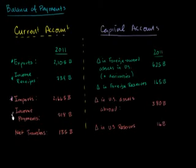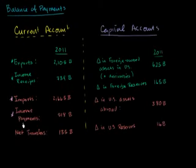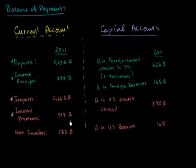On the other side, we have income payments — the other side of income receipts. This is foreigners owning assets in the United States. If a foreigner owns a pizza parlor in the United States and that pizza parlor makes $100,000 in a given year, that $100,000 will go to that foreigner as an income payment. This is income on foreign-owned assets in the US. It does not go to an American — not to the government, a private citizen, a corporation, or the Federal Reserve. It goes to someone outside of the country, making it an outflow.